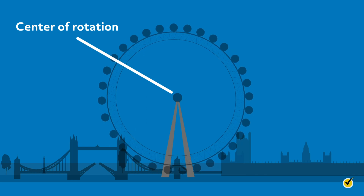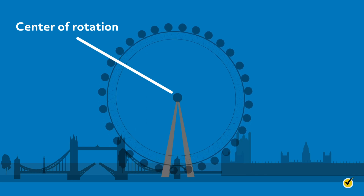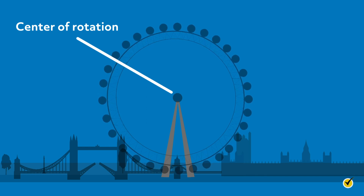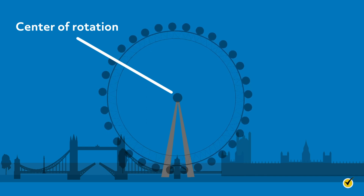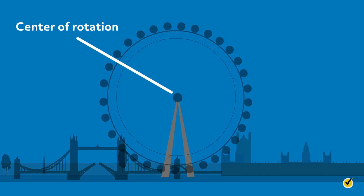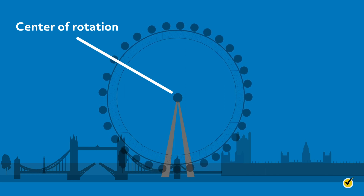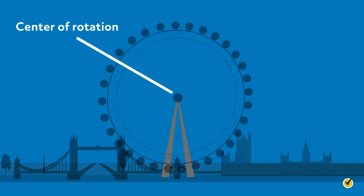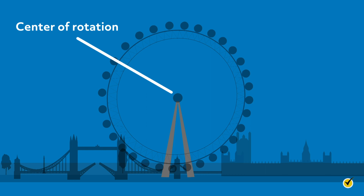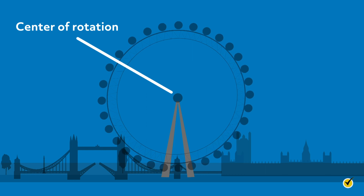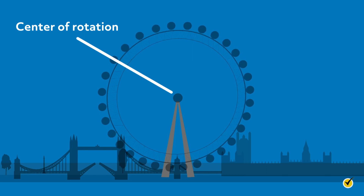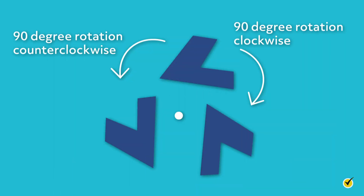The measure of the amount a figure is rotated about the center of rotation is called the angle of rotation. The angle of rotation is usually measured in degrees. We specify the degree measure and direction of a rotation. Here is a figure rotated 90 degrees clockwise and counterclockwise about a center point.